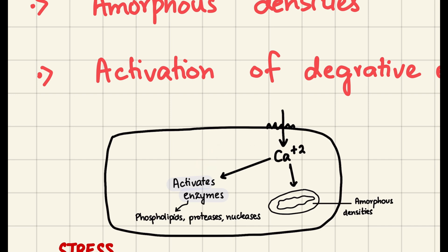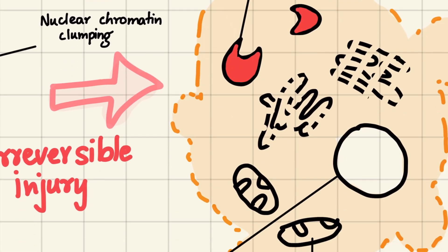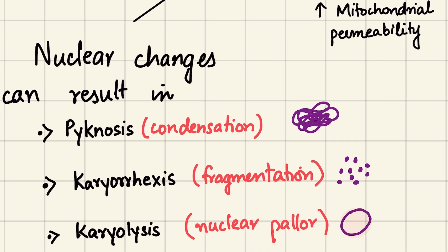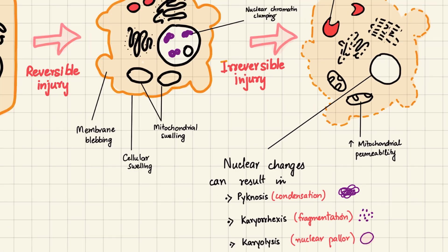The calcium also starts activating enzymes such as phospholipases, proteases, and nucleases, all of which will start dissolving the cell's phospholipids, proteins, and nucleus. These enzymes attack the nucleus in three steps: first is pyknosis, where the nucleus condenses; second is karyorrhexis, where the nucleus fragments; and third is karyolysis, in which the nucleus completely dissolves. At this point the damage is beyond repair.